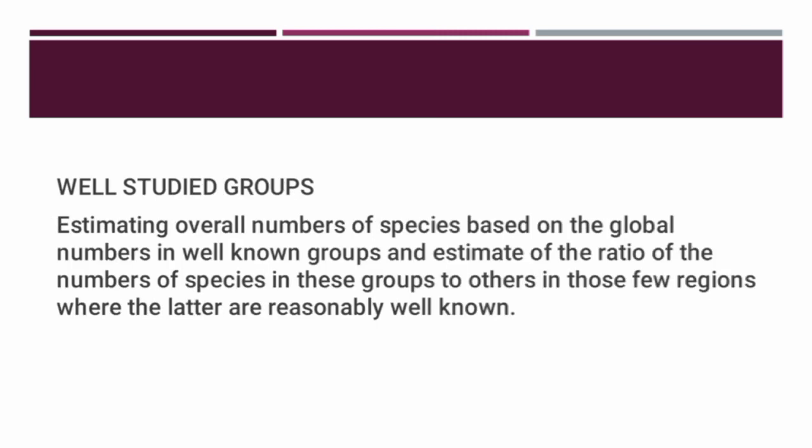The last method is well-studied groups: estimating overall numbers of species based on the global numbers in well-known groups and estimates of the ratio of the numbers of species in these groups to others in those few regions where the latter are reasonably well-known.